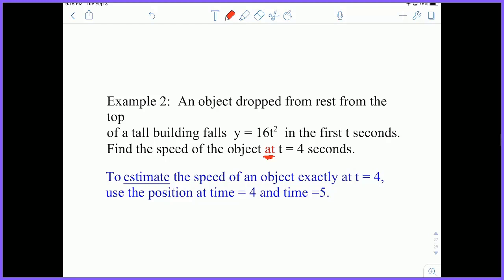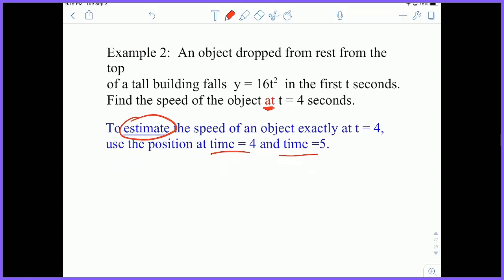Well, in order to get an estimate, not an exact value, an estimate, let's go ahead and examine the position at 4 and 5. 5 is a very close value to 4. So let's do the same thing we just did. At t equals 4, I think we knew the position already was 256, so we'll just write that down. And then if we use t equals 5 to find the position, you just plug 5 into the function, and you get 400. And so that gives you the coordinate (5, 400).